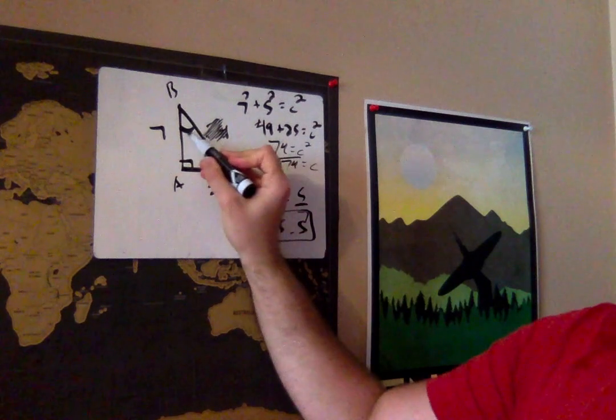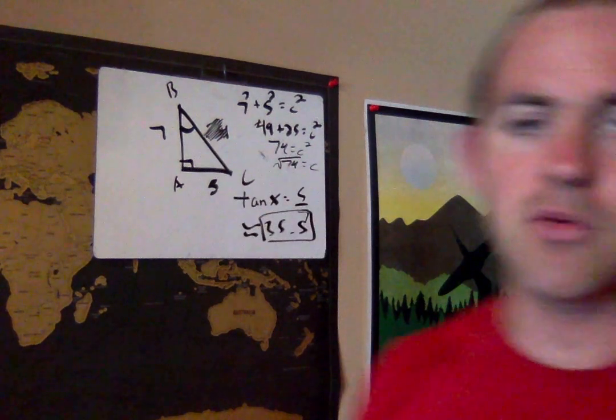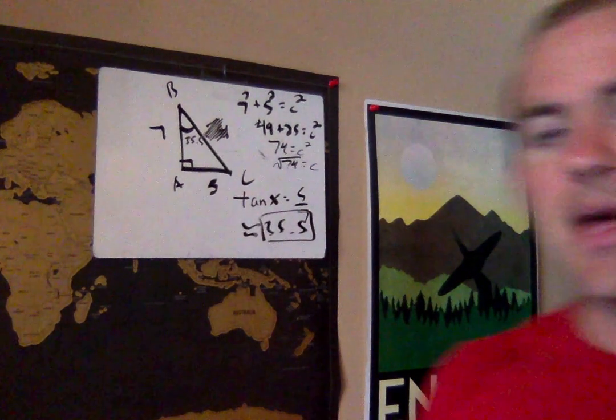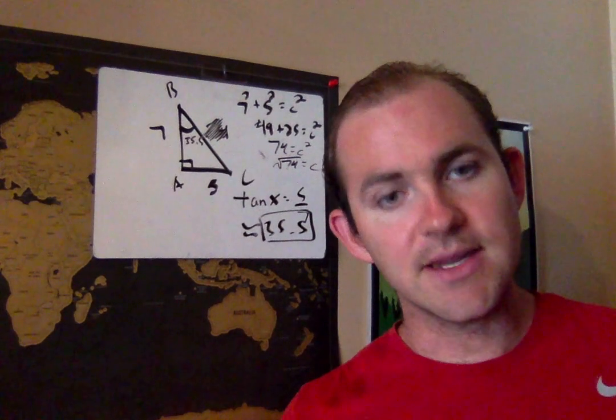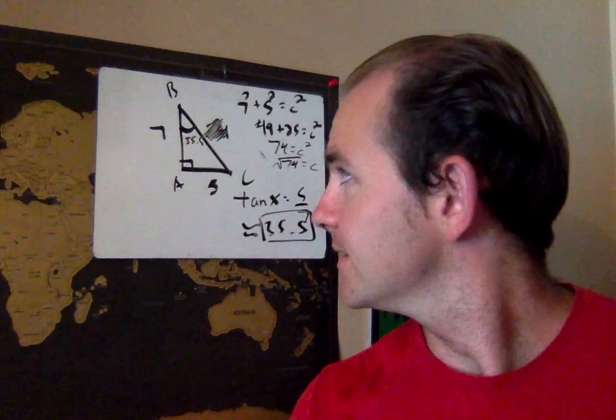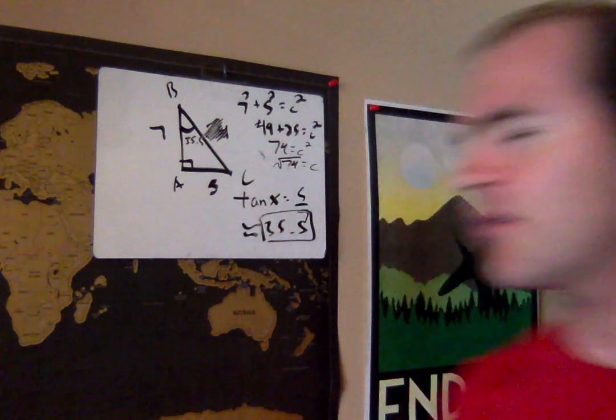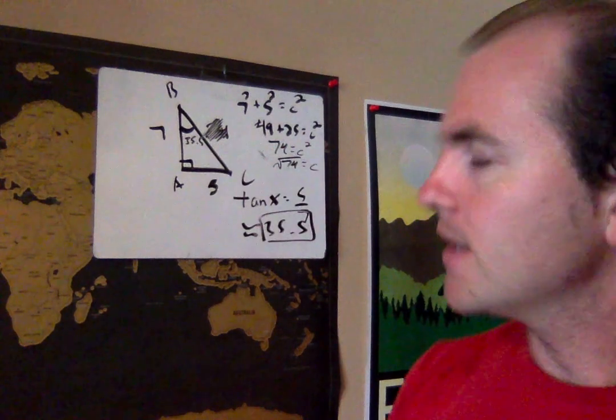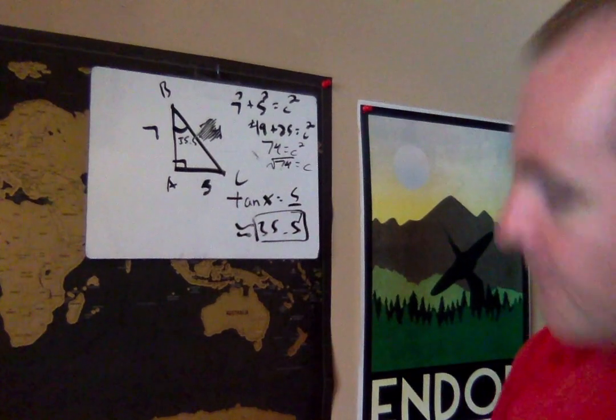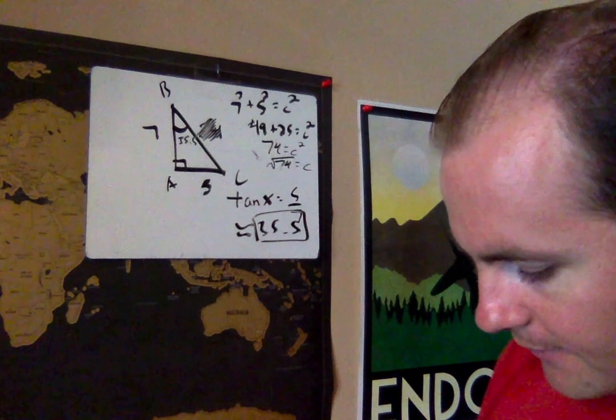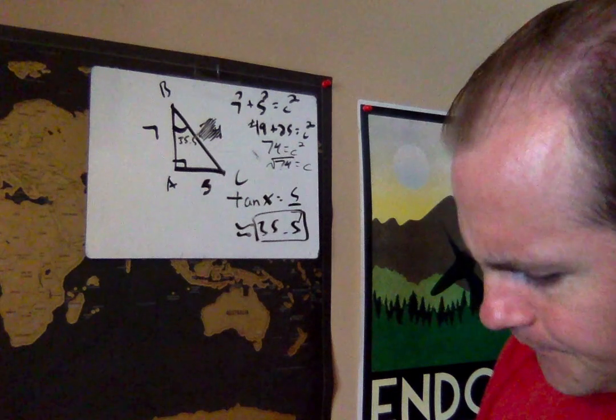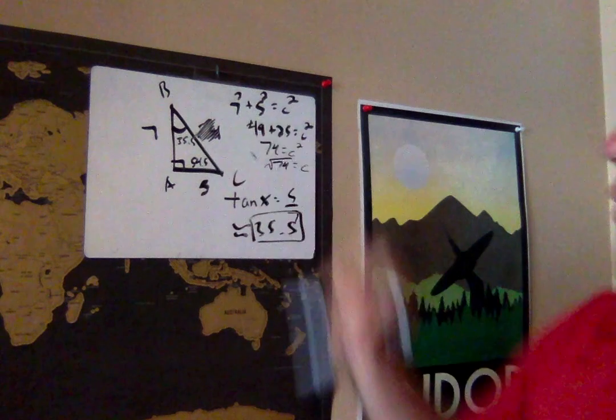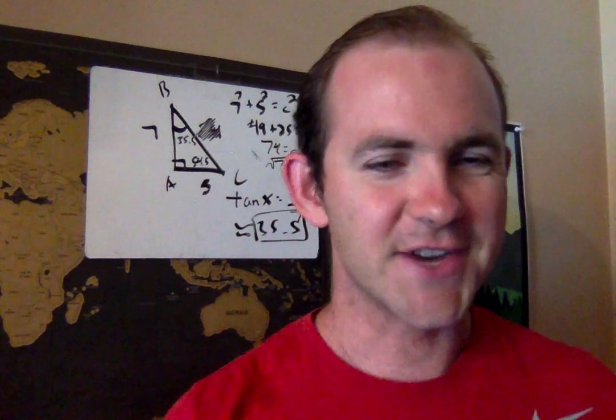So this angle right here would end up being 35.5 and I want you guys to notice something. Do you realize that once I find that angle, now I can just use triangle sum theorem in order to be able to find C? What do I know that the three angles in a triangle add up to? They have to add up to 180. So if I have 90 and 35.5, all I got to do is subtract those from 180. So you would do 180 minus 90 minus 35.5 and now we get that this angle over here is about 54.5.